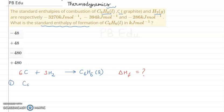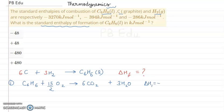The first reaction is the combustion of C6H6: C6H6 reacts with oxygen to form CO2 and H2O. Balancing gives coefficients 6 for CO2 and 3 for H2O, with 15/2 O2. The enthalpy for this reaction is ΔH1 = minus 3270 kJ/mol.